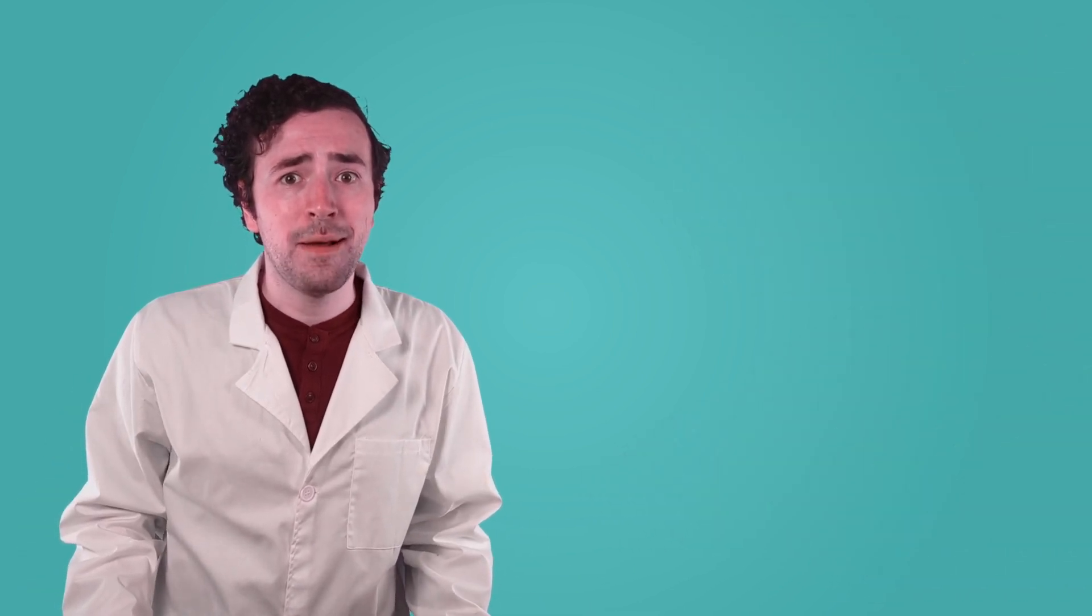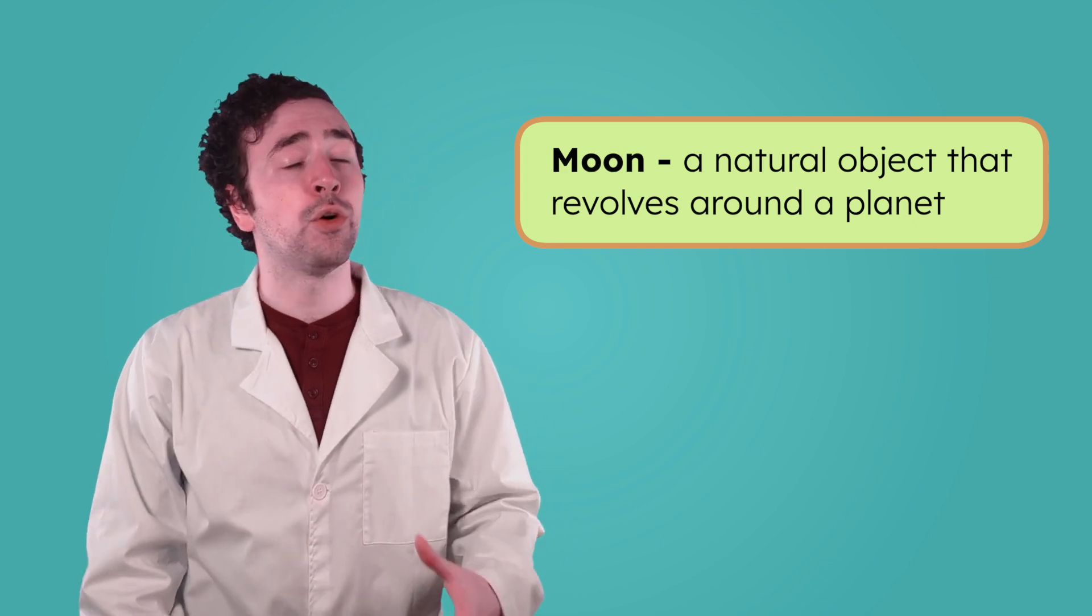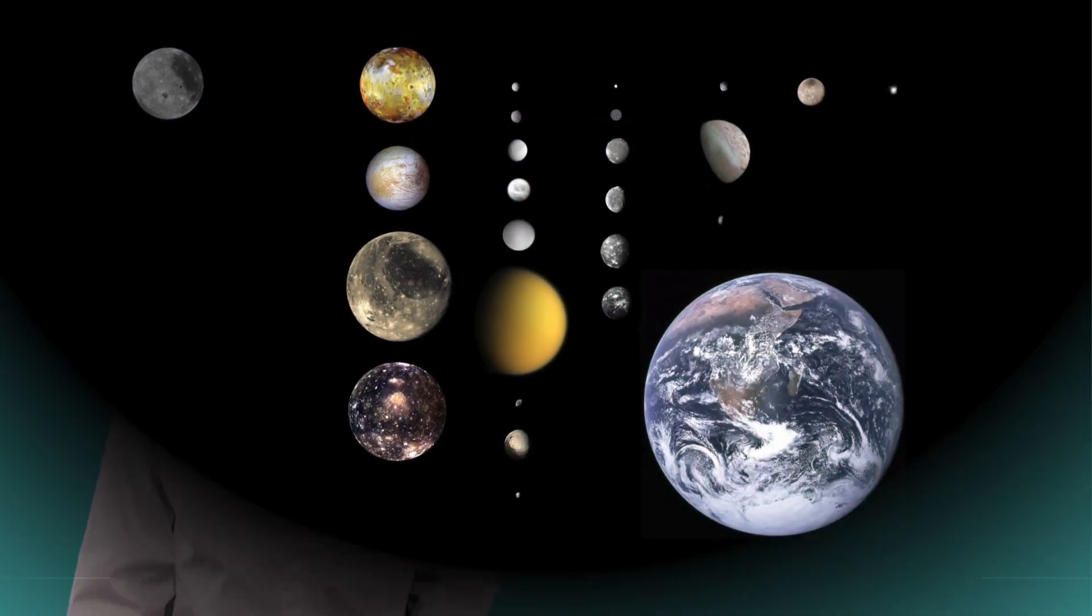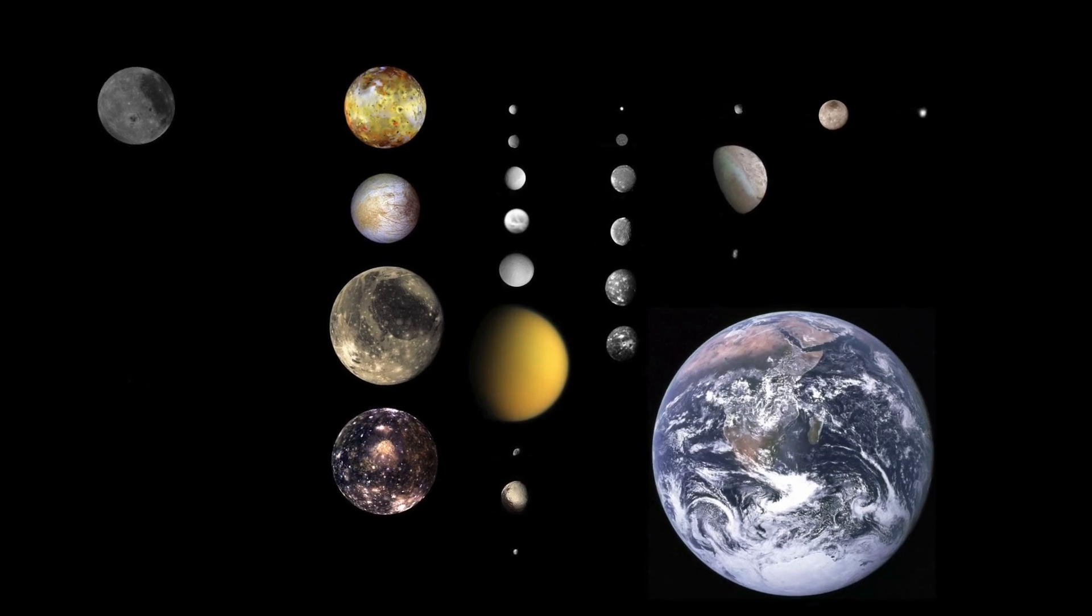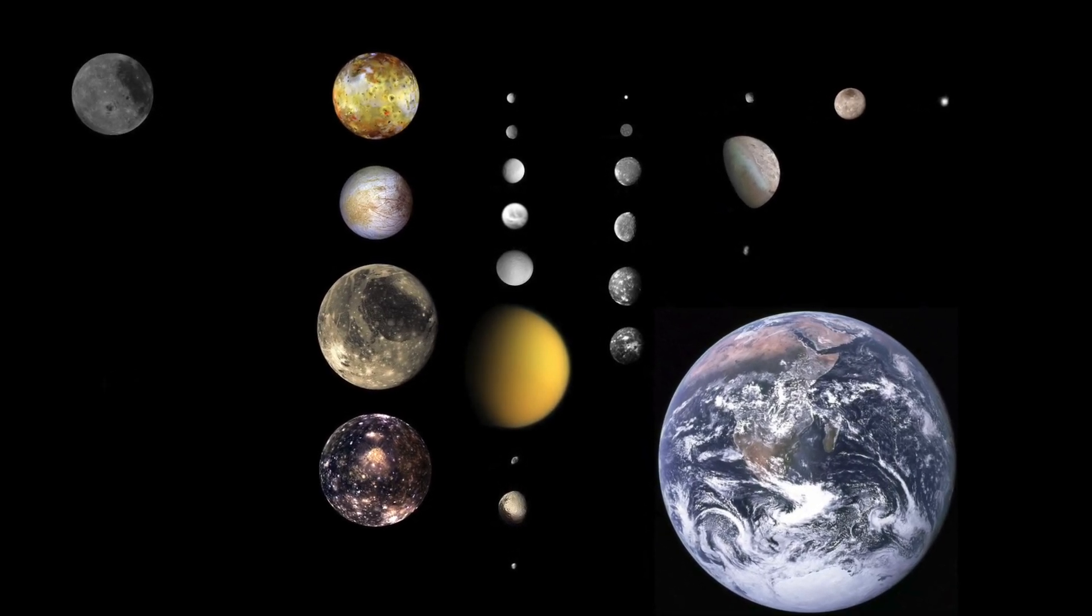So what's the difference between the moon and those other satellites? Well, humans didn't build the moon and no one sent it into space. A moon is a natural object that revolves around a planet. There are over 200 moons in our solar system, and they come in all sorts of shapes and sizes.